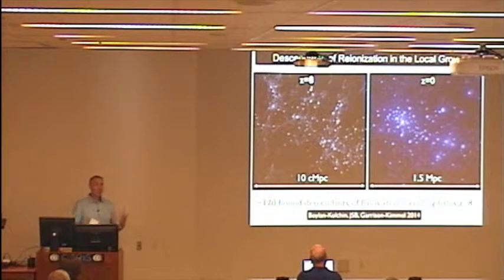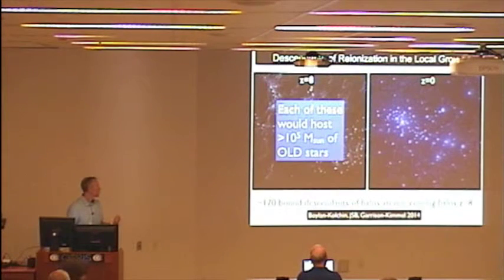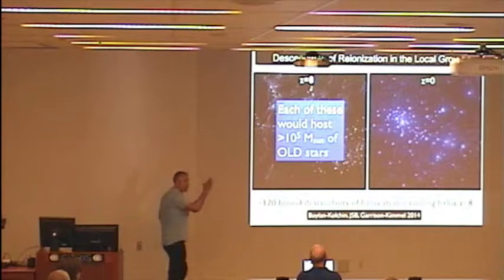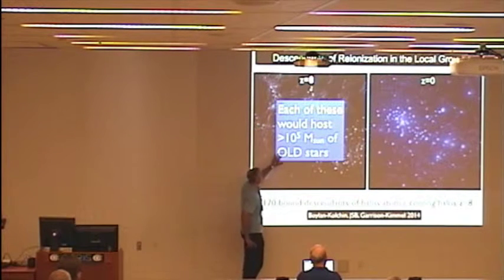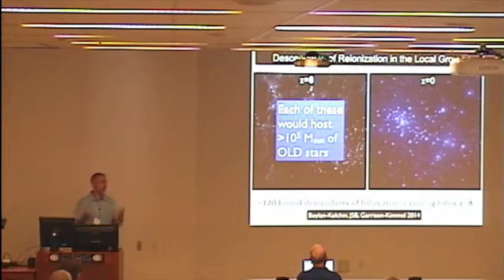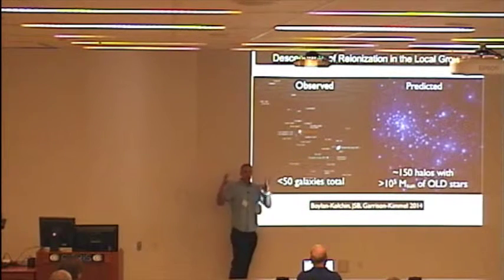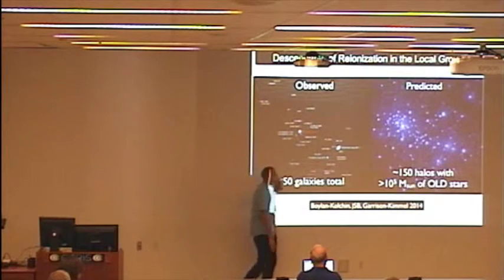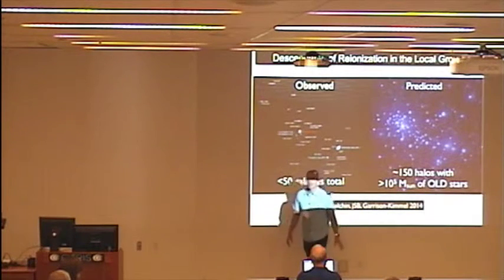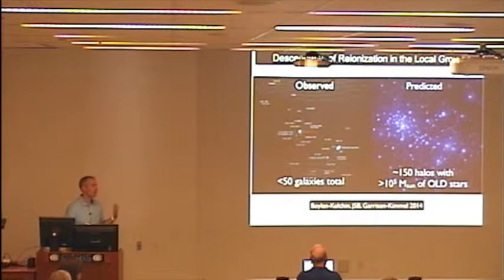So from that you see that there's some serious tension here because there are not that many 10 to the 5 solar mass galaxies in the local group. So each of these, if this conventional wisdom holds, would host more than 10 to the 5 solar masses of ancient stars now. It's not even total solar masses of stars, it's ancient stars today. In total there are fewer than about 50 galaxies sort of in the classical scenario that I'm going to focus on. Whereas the predicted count is way higher than this. So this says there's serious tension here. So there's something in this model that has to break.